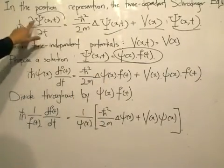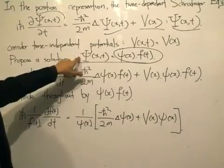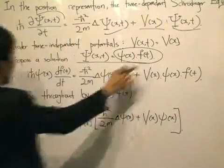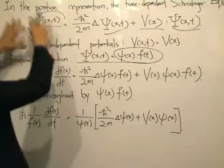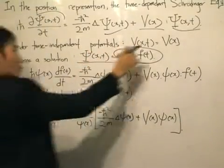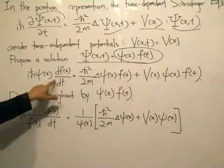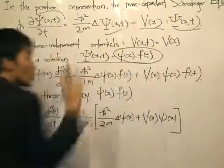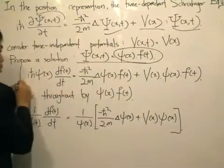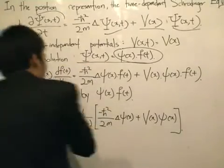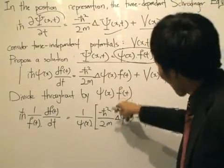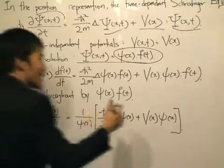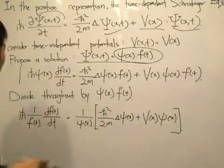We substitute this expression into the time-dependent Schrödinger equation. Taking the partial derivative with respect to t: since φ is in terms of x, we can bring it out and just partially differentiate f(t) with respect to t, so it becomes the ordinary derivative. After substituting the proposed solution, we divide through by φ(x) multiplied by f(t). This action allows us to separate the partial differential equation.